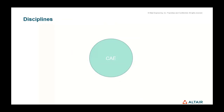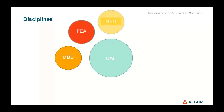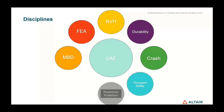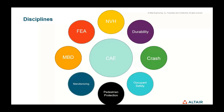Within the world of CAE there are lots of different disciplines and sectors. We start looking at MBD — multi-body dynamics — as well as finite element analysis, which splits into different sectors like NVH, durability, crash and impact analysis. Within crash scenarios we consider occupant safety and pedestrian protection, and anything we design is useless if it's not manufacturable, so we always need to look into manufacturing simulations as well.